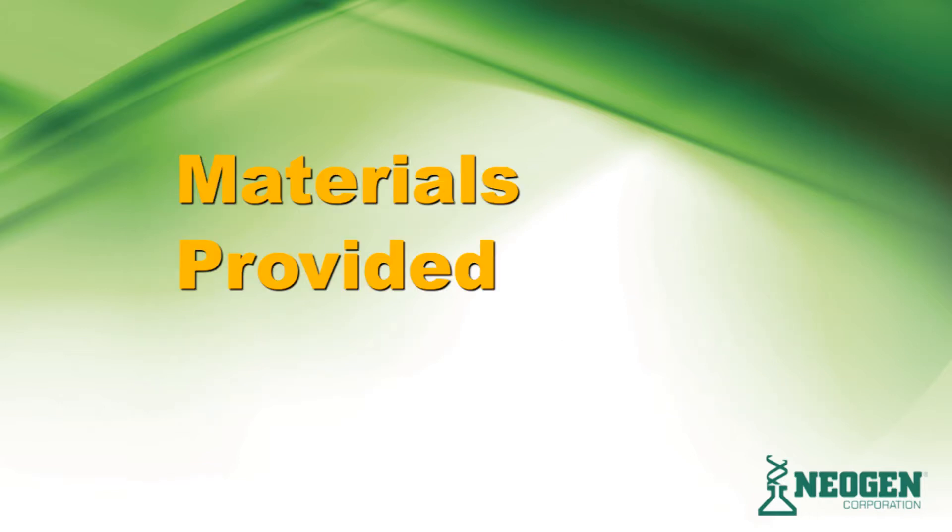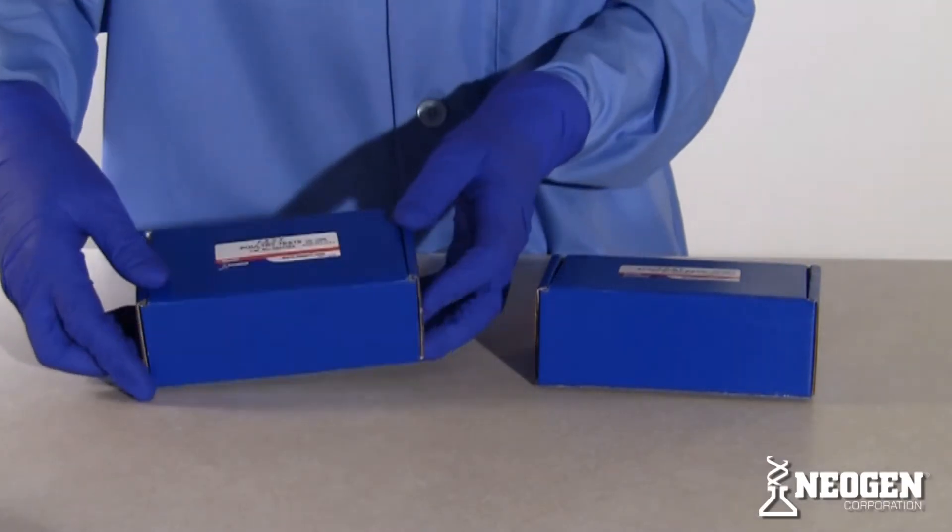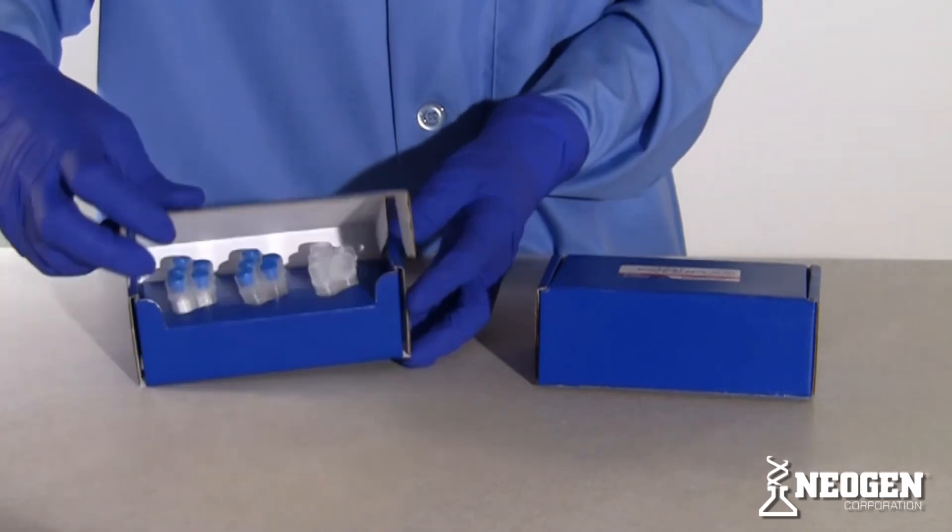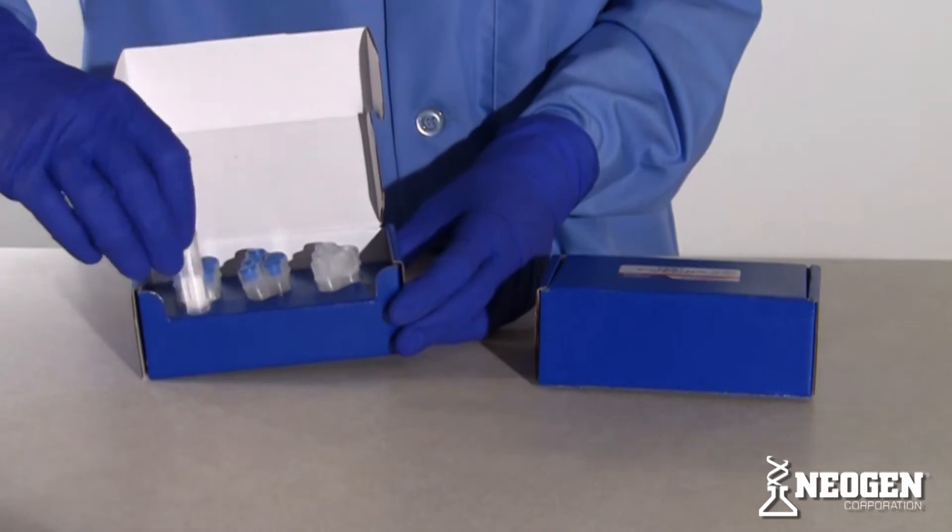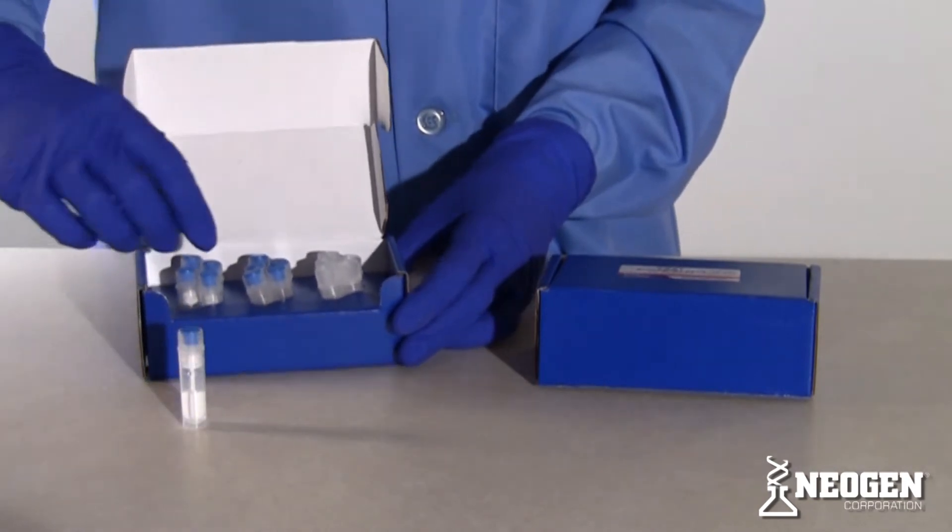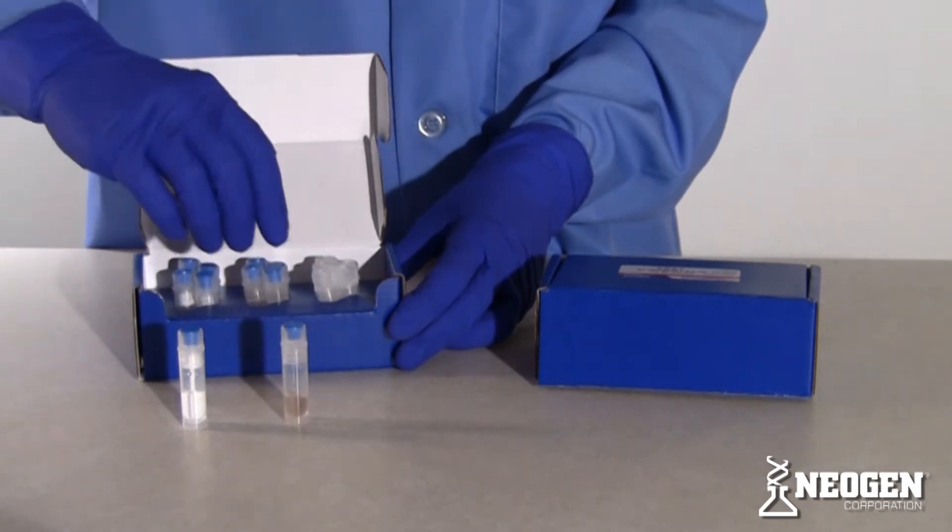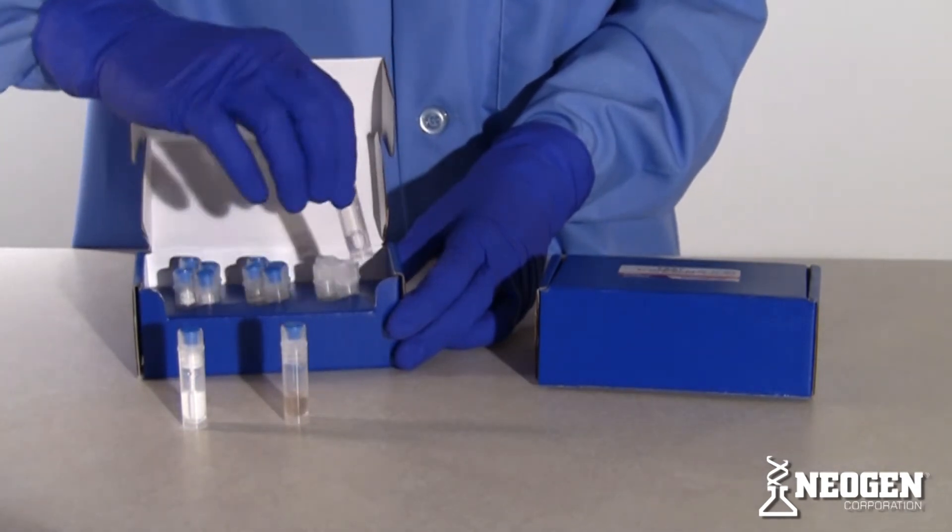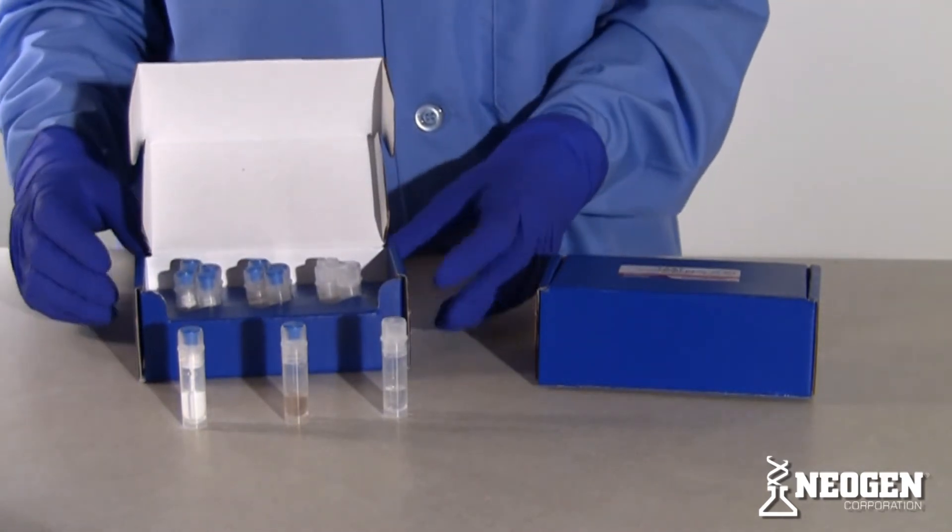Materials provided. Each fast test kit includes five packs of five fast immunosticks. Each immunostick is in a color-coded tube containing a white plastic paddle coated with capture reagents specific for each species. Tube caps are color-coded according to test type. In this example, the cap is blue, which indicates we will be demonstrating a test for poultry meat.